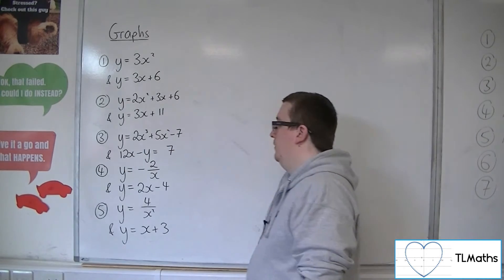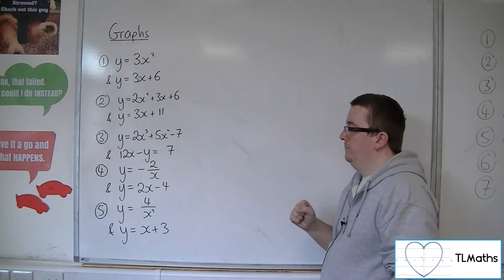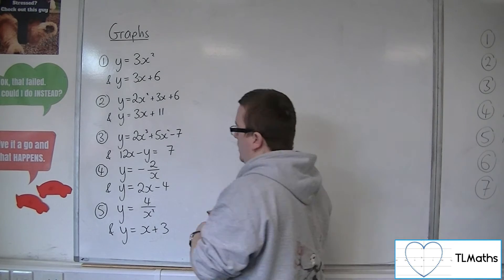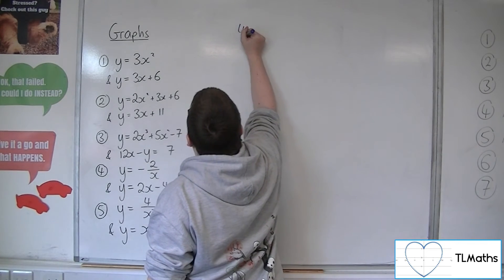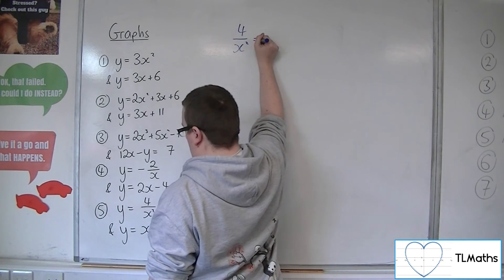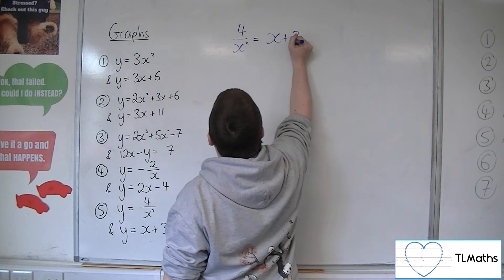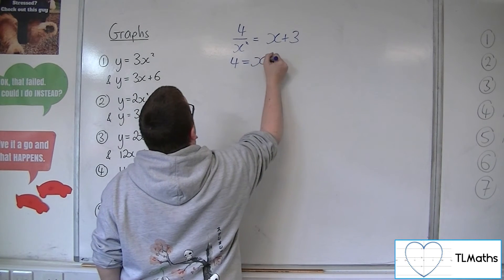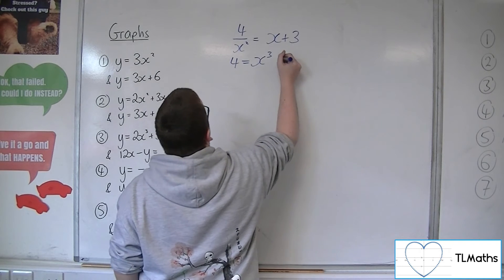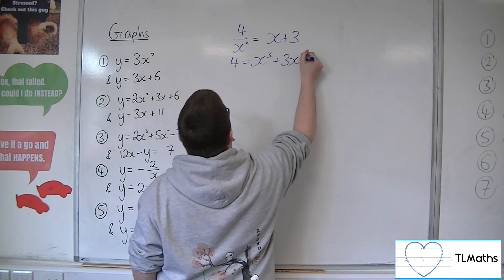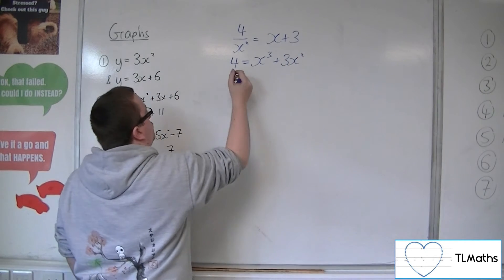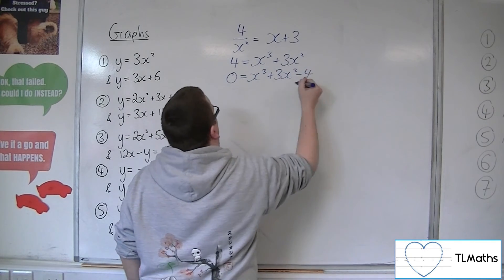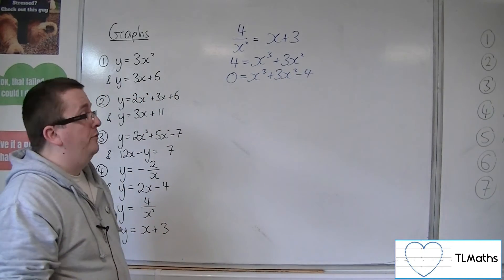Finally, number 5: y equals 4 over x squared and y equals x plus 3. Setting them equal, 4 over x squared equals x plus 3. Multiplying both sides by x squared gives 4 equals x cubed plus 3x squared. Subtracting 4 from both sides leaves a cubic to solve: x cubed plus 3x squared minus 4 equals 0.